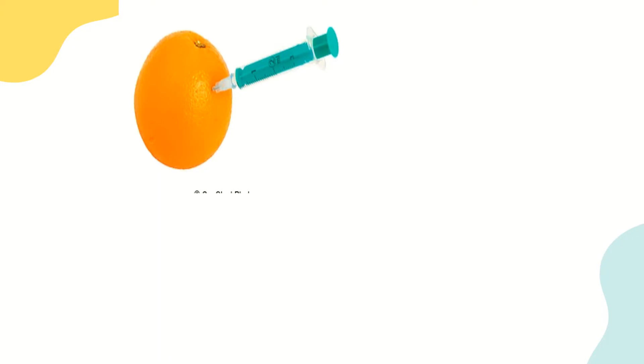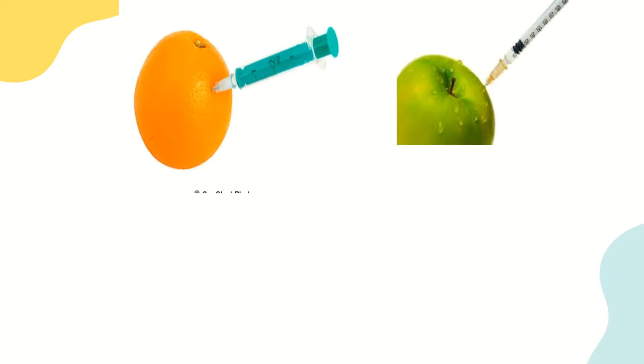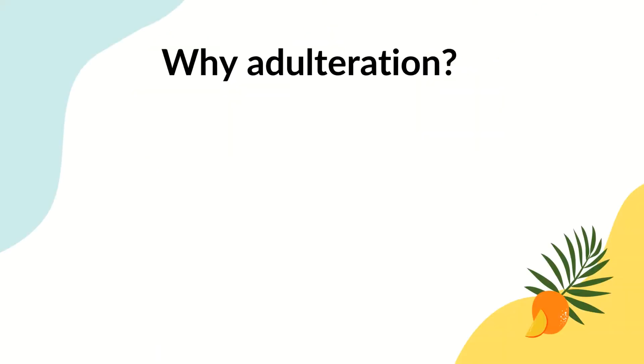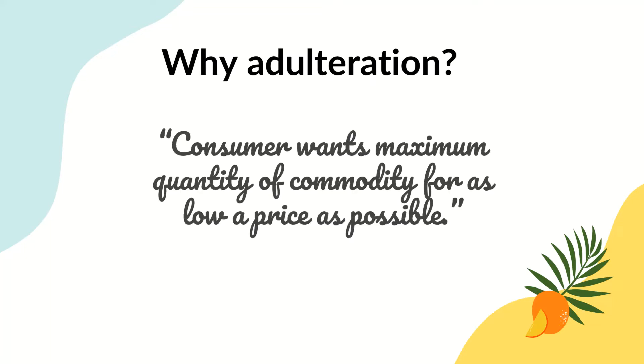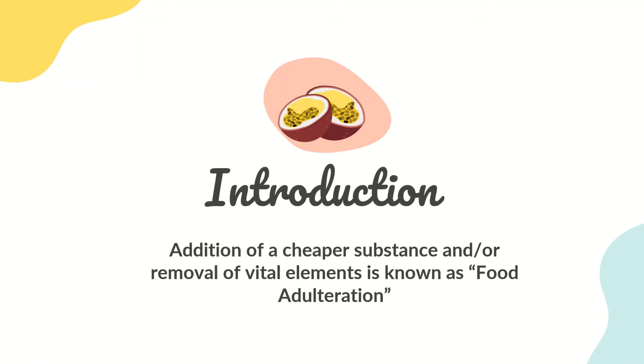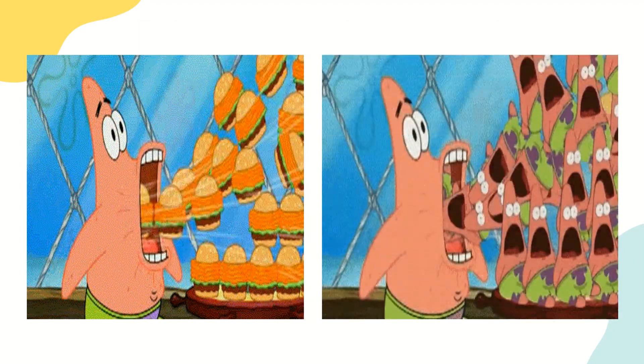We all know that food is essential for life and it should be pure, nutritious and free from any type of adulterant to maintain human health. Why do people do adulteration? This is because the consumer wants maximum quantity of a commodity for as low a price as possible. This attitude, coupled with the desire to increase profit margin, leads to the quality of the product being reduced through addition of a cheaper substance or removal of vital elements — which is known as food adulteration.